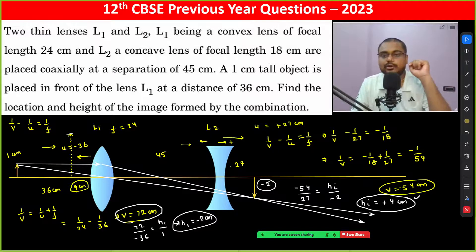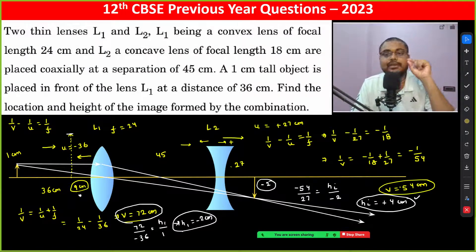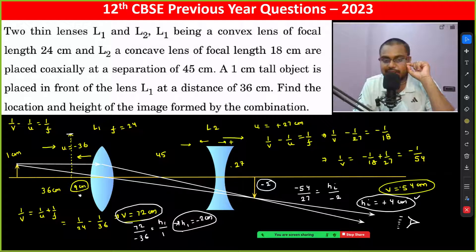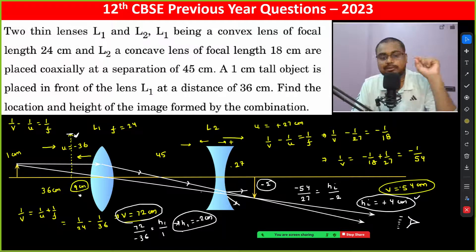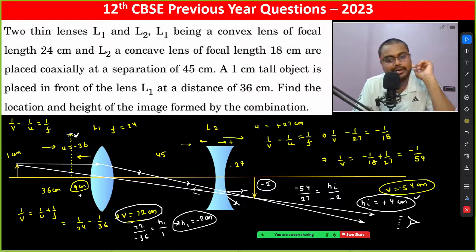As a side note, students might think that since the image appears 9 centimeters in front of L1, refraction through L1 should happen again. However, that is not the case, because the actual rays are not present there — they have diverged from the concave lens and do not travel backward. It is just a virtual image, an illusion, so there is no second refraction through L1.